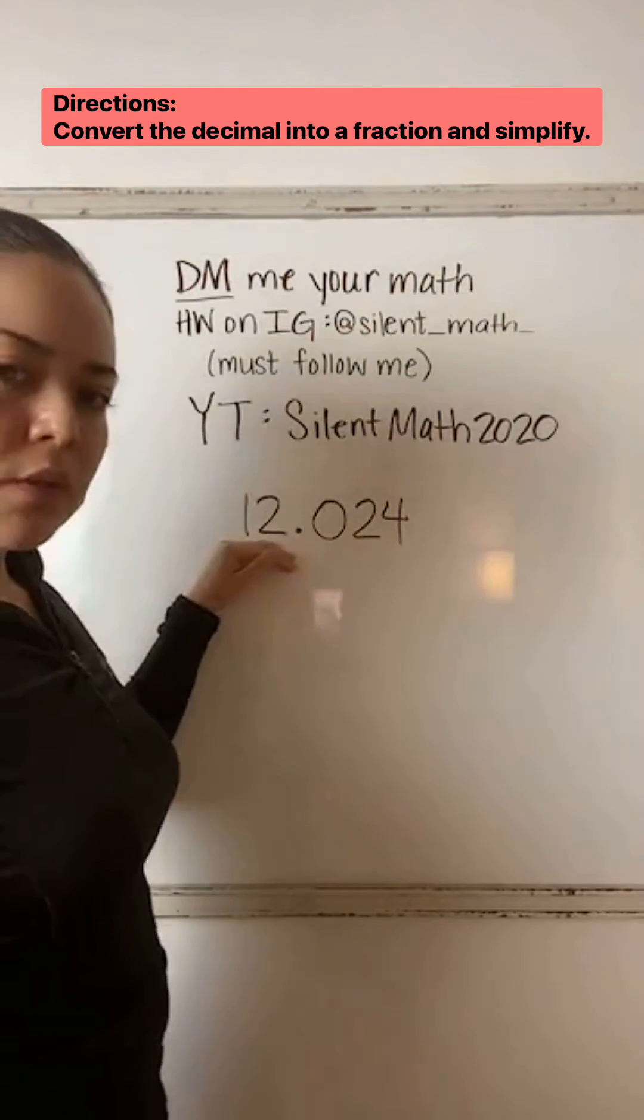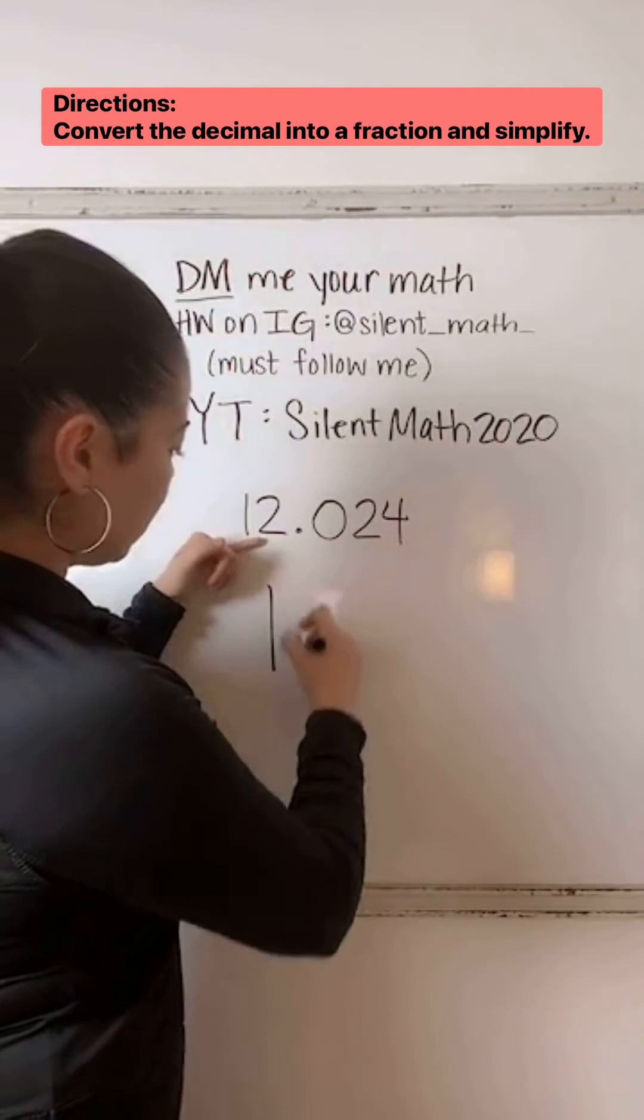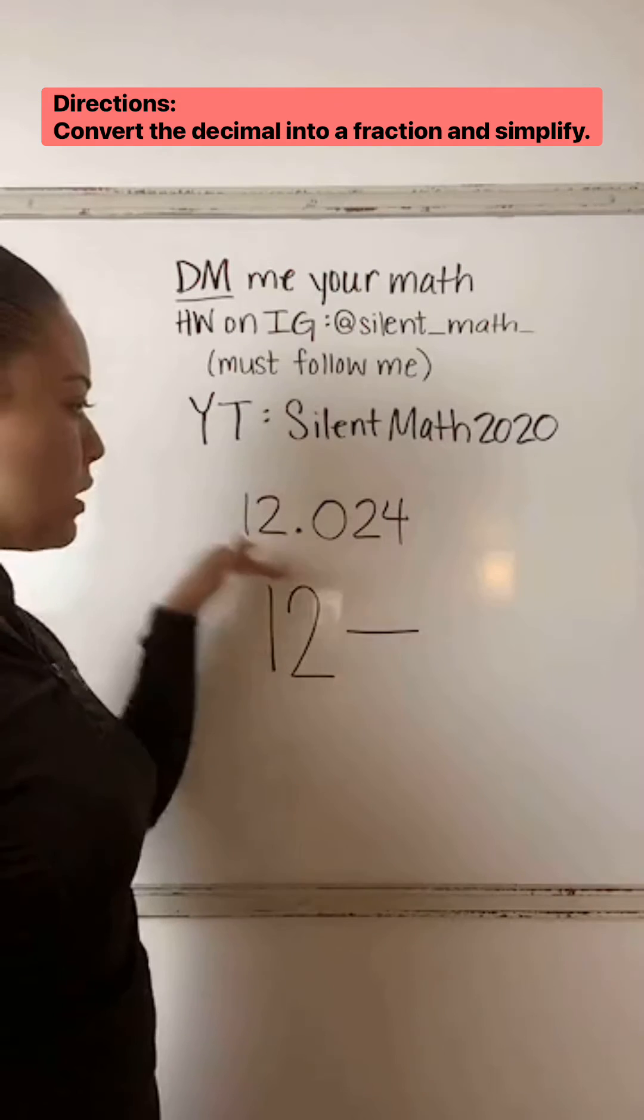This is the whole number, right? So we're going to do 12 as the whole number. We're going to write it really big. This is going to end up being a mixed number.